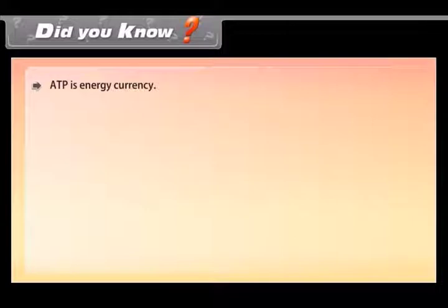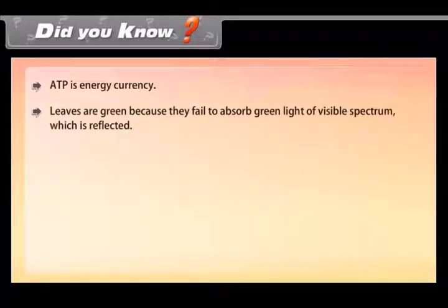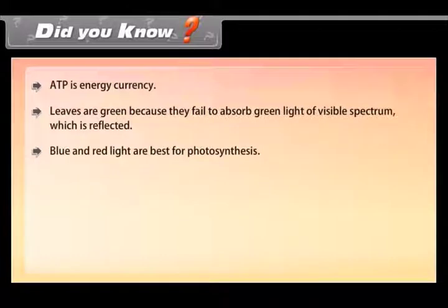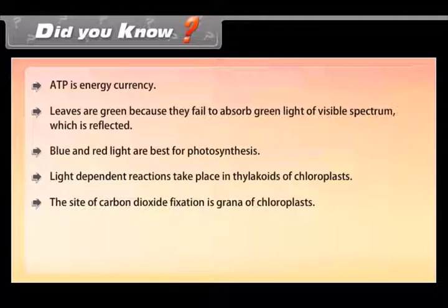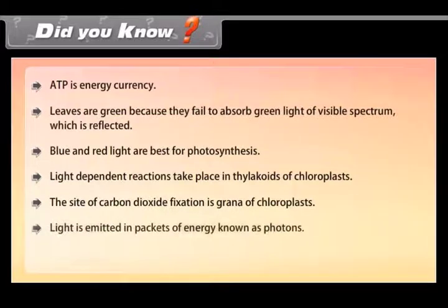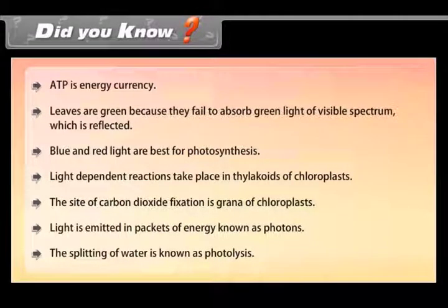Did you know: ATP is energy currency. Leaves are green because they fail to absorb green light of visible spectrum which is reflected. Blue and red light are best for photosynthesis. Light-dependent reactions take place in thylakoids of chloroplasts. The site of carbon dioxide fixation is grana of chloroplasts. Light is emitted in packets of energy known as photons. The splitting of water is known as photolysis.